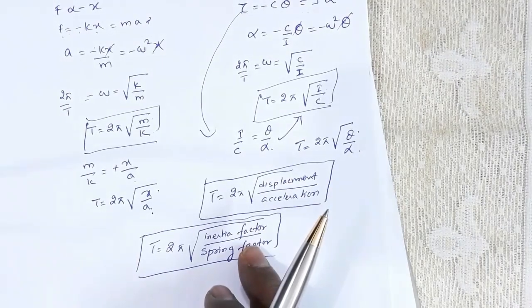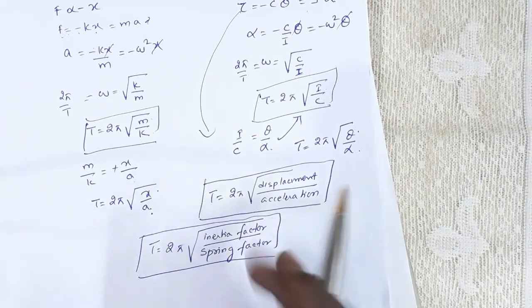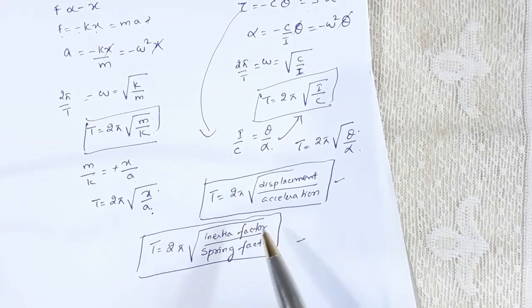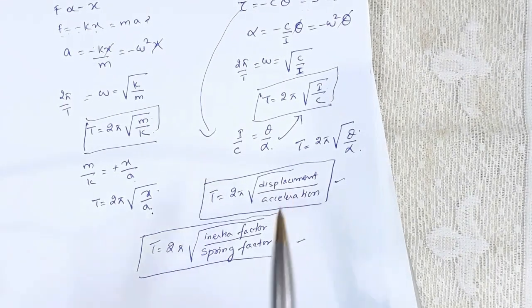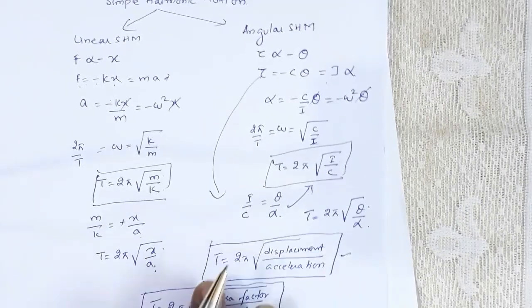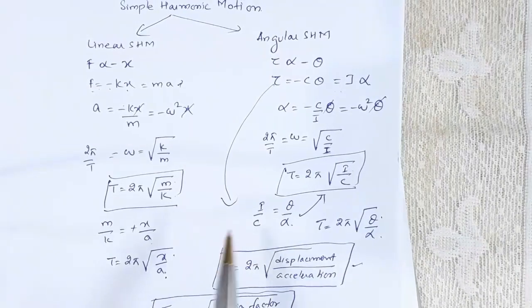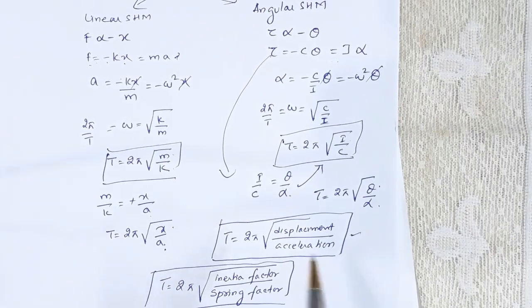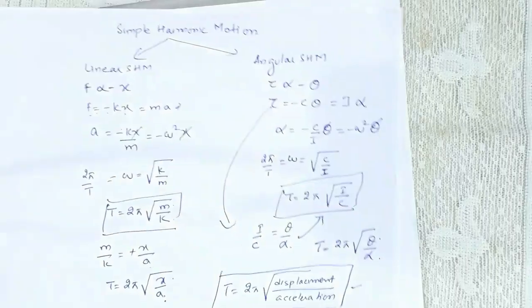From both these simple harmonic motion cases I have obtained two general relations. These general relations can be used to identify the time period and can be used to solve MCQs directly by looking at the expression to select a proper answer. This is the first video in the series on the chapter simple harmonic motion. Thank you for watching.